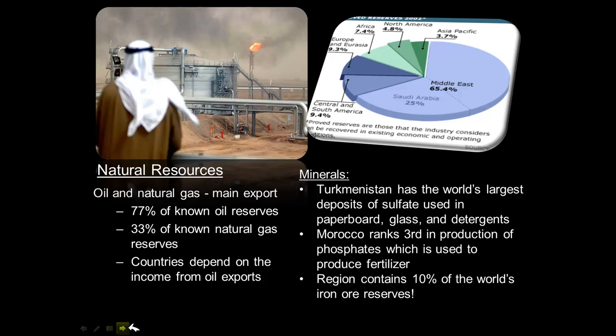Now for natural resources: the Middle East is known for having enormous oil and gas resources. Up to 66 percent of the world's known oil reserves are in the Middle East, and 33 percent of known natural gas reserves are there as well. Countries around the world depend on the Middle East for oil, and Middle Eastern countries depend on that revenue from oil exports.